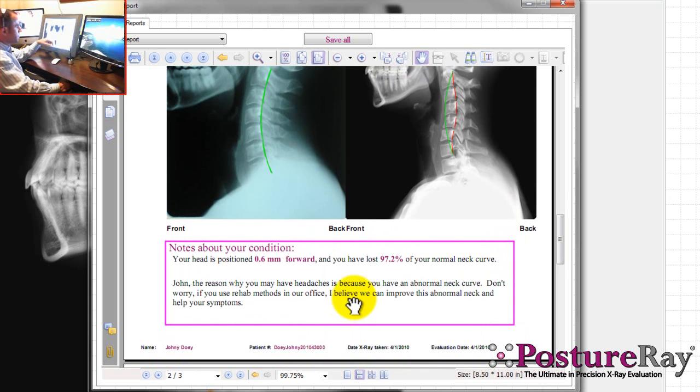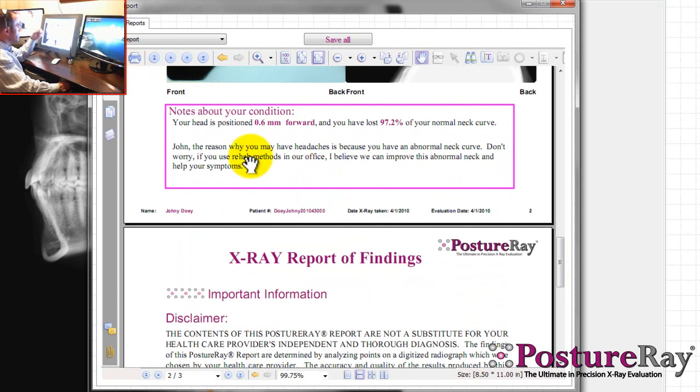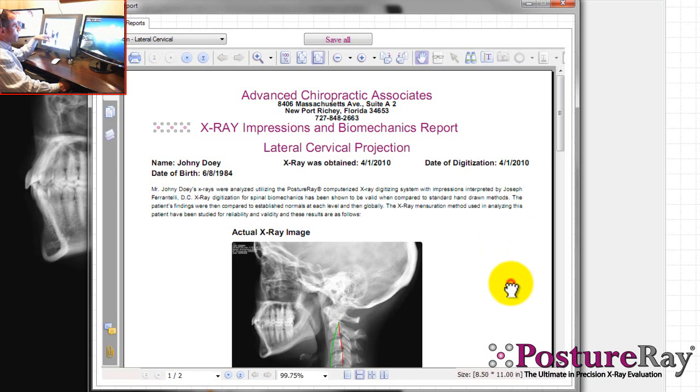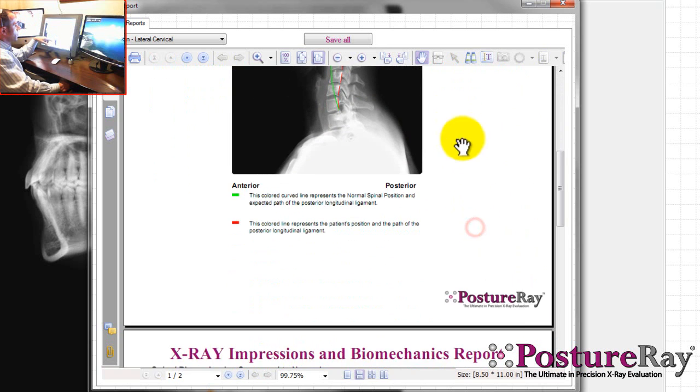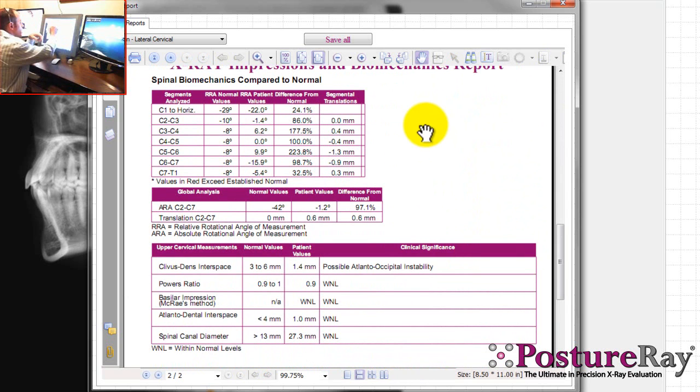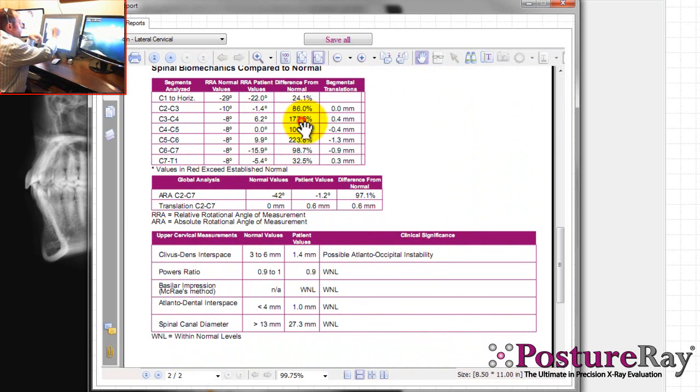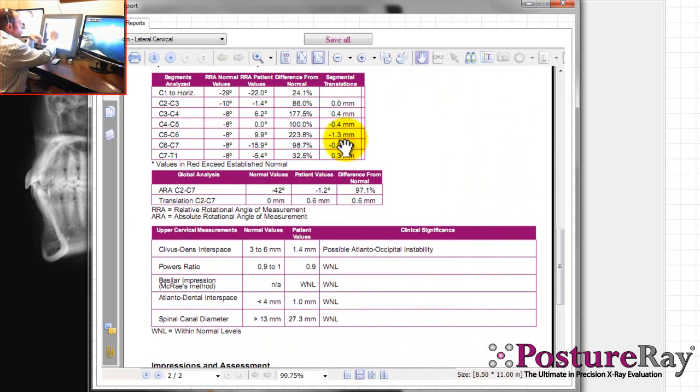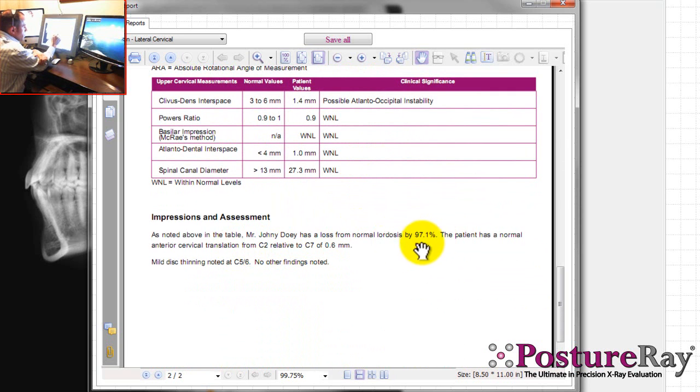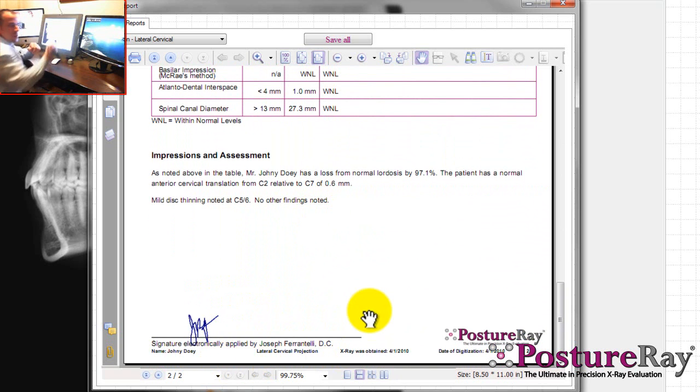We can save this document into your EMR software. It also generates an impression report, which is like the pathology report with more information. You can see here we have the normal values, the patient values, the difference from normal, percent difference from normal, segmental translations, the global measurements, and we have the upper cervical analysis. You can see the clavis-dens interspace, which no other software measures, in case atlanto-occipital instability exists. It automatically calculates the overall change in lordosis. My pathology report would go in the next section. Then I signed it.